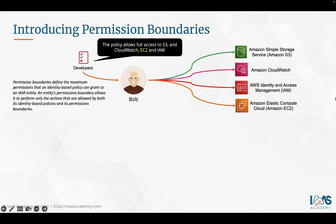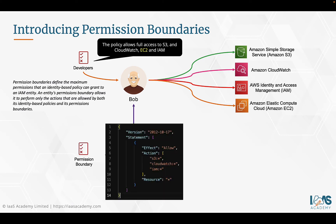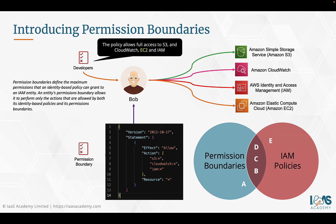Let's look at a typical permission boundary we could apply to Bob to restrict his level of access. In this particular policy, Bob is allowed to use S3, CloudWatch, and IAM — there's no mention of EC2. Ultimately, Bob will not be able to access Amazon EC2 because both the permission boundary and the IAM policy need to be aligned. Permission boundaries define the maximum level of permission an IAM user or role can have. However, you still need IAM policies to define what those permissions are.